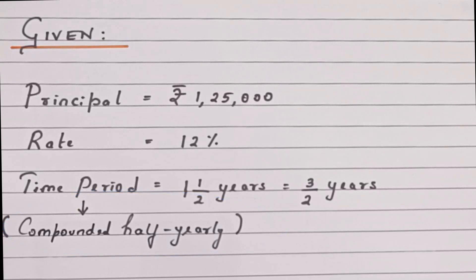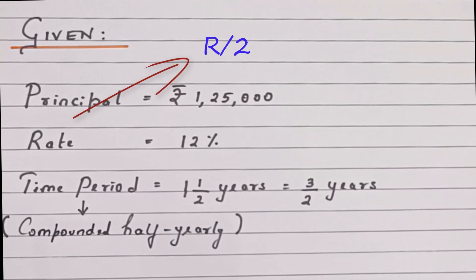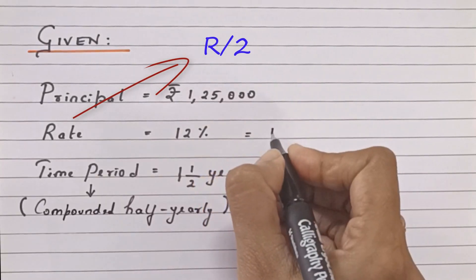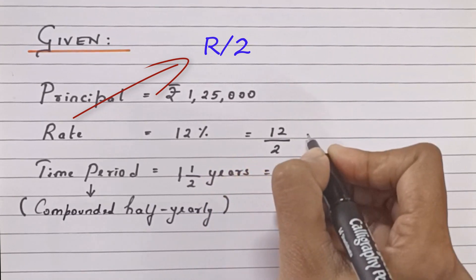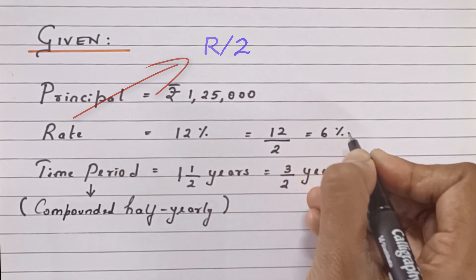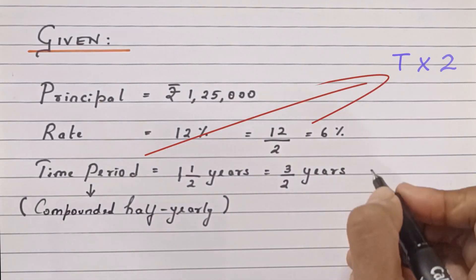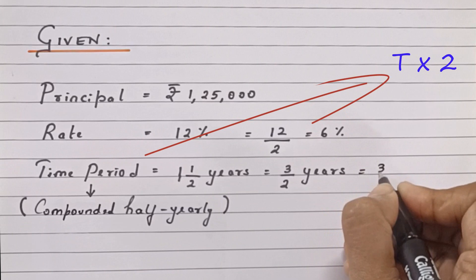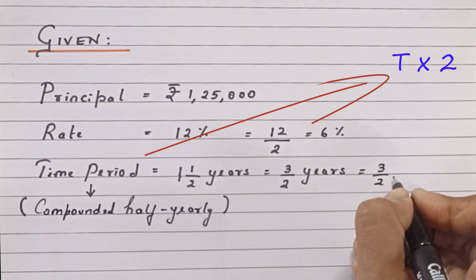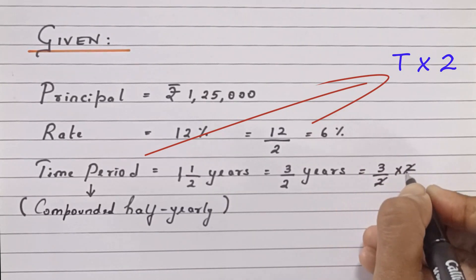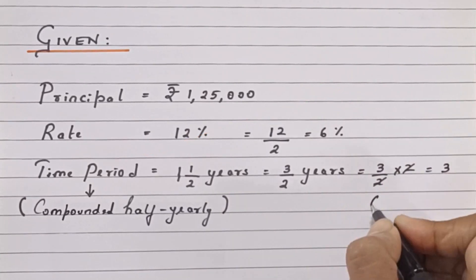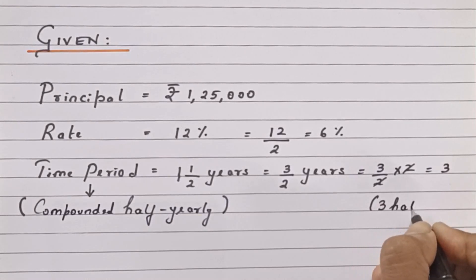To calculate the compound interest for such sums, we need to divide the rate by 2 — that is 12 by 2 — so the rate of interest becomes 6%. For the time period, we need to multiply by 2, so we get 3 by 2 into 2, giving us 3 half years.